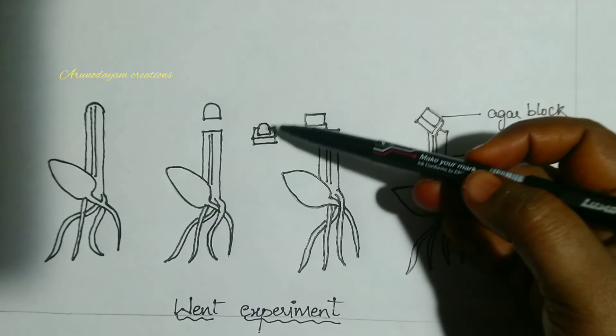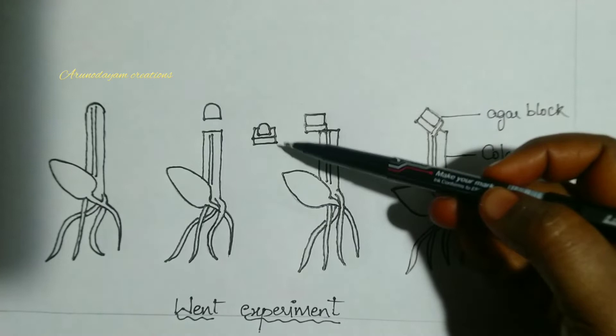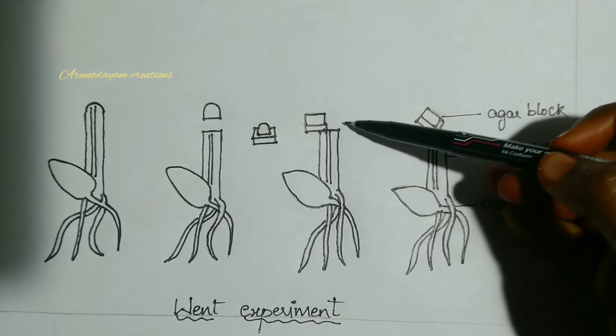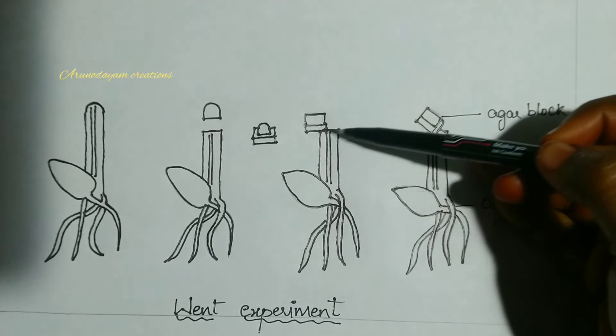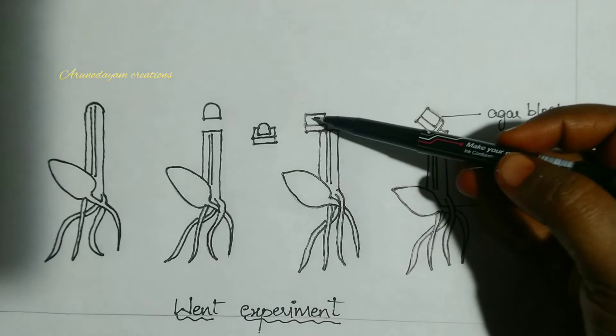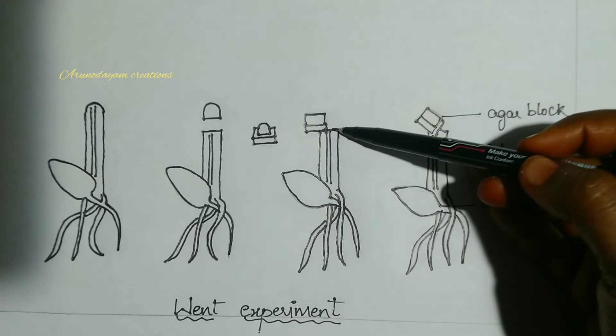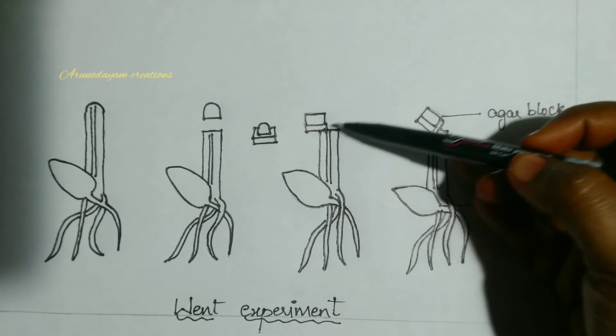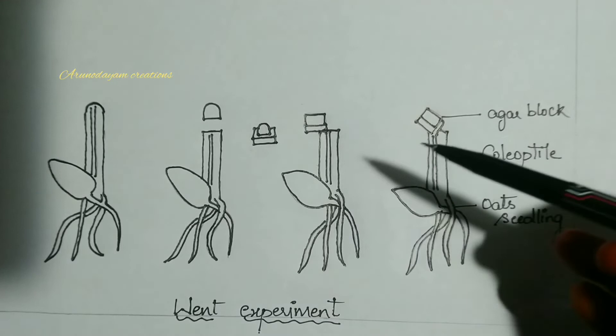He cut this agar block into small slices. He put the agar block slice on the stump of oats seedling in such a way that half of the portion of coleoptile is covered with agar block and half of the portion is exposed to light. He placed it under sunlight.